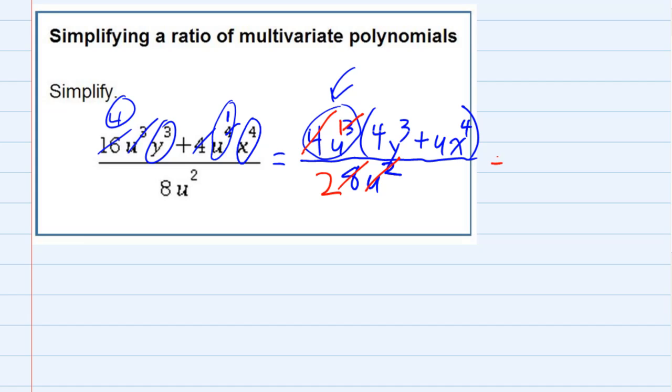So what are we left with? In the top I have that U, just one of them now because I canceled the other two. And I have four Y to the third plus U X to the fourth. There was nothing in there that would cancel. And in the bottom I'm left with just the two. You can distribute out that U if you like or you can leave it just as is.